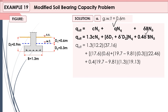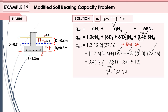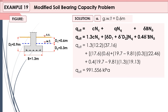Substituting into the square footing formula: 1.3 × c × Nc + (17.6 × 0.6 + (19.7 − 9.81) × 0.3) × Nq + 0.4 × (19.7 − 9.81) × 1.3 × Nγ. Here γ′ = γsat − γwater = 19.7 − 9.81. The total ultimate bearing capacity for this case is 191.556 kPa.